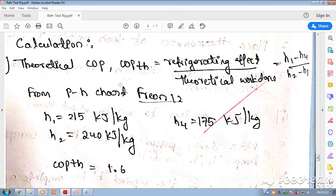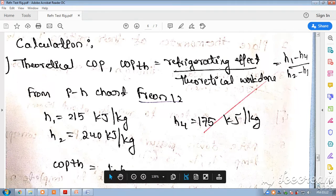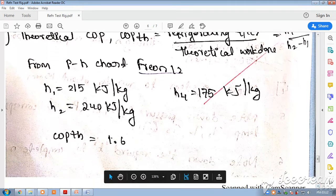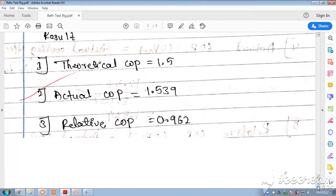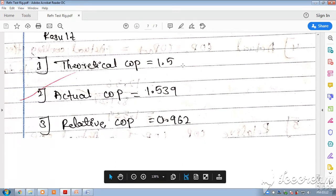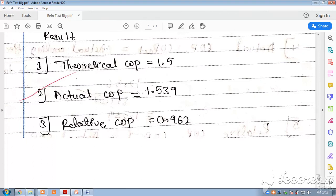From the pressure-enthalpy diagram of Freon 12, you get values like H1 is 215 kJ/kg, H2 is 240, H4 is 175. Substituting these values, we get the theoretical COP as 1.5. If you take the actual readings and calculate the COP, you will get it slightly lower actually - theoretical COP should be high, actual COP should be low. The relative COP is the ratio of actual divided by theoretical, so you get something like 0.9.